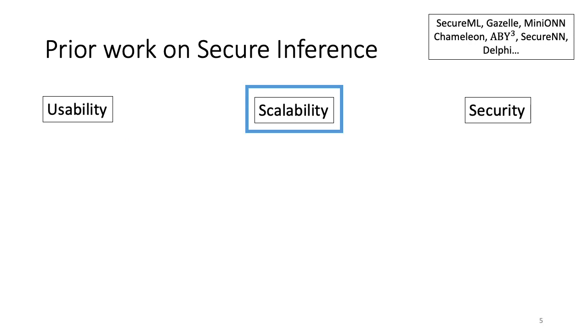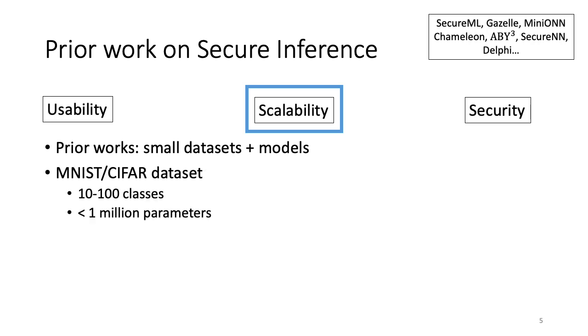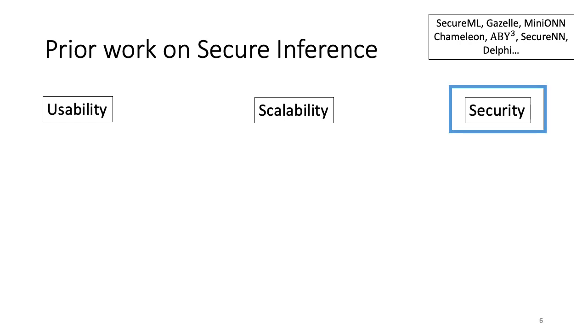Coming to the second aspect, that is scalability. Prior works have only evaluated simpler models over small datasets. More concretely, they have worked over datasets like MNIST and CIFAR, which have 10 to 100 classes and the network over them has less than a million parameters. To evaluate real-world benchmarks, we would like to work with the ImageNet dataset, which has 1000 classes and the neural networks for it have millions of parameters.